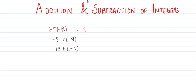In the next question we can clearly see that negative 8 is being added to negative 9, so the answer is clearly negative 17. In the next question we can see positive 12 is being added to negative 6, so the answer is going to be positive 6.